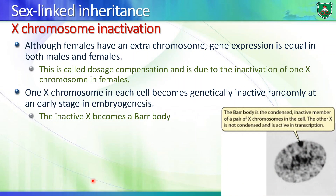Now let's move on to sex-linked inheritance, starting with the X chromosome. Females have two X chromosomes while males have only one. It doesn't make sense that females would produce double the number of proteins, so one of the X chromosomes in females is inactivated — this is known as dosage compensation — so that males and females produce the same amount of proteins in their cells.